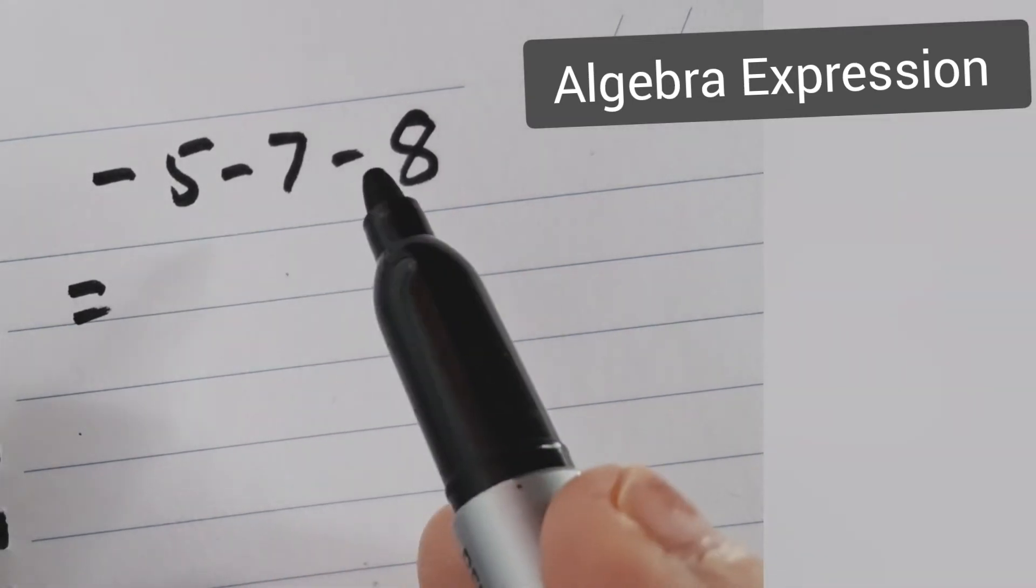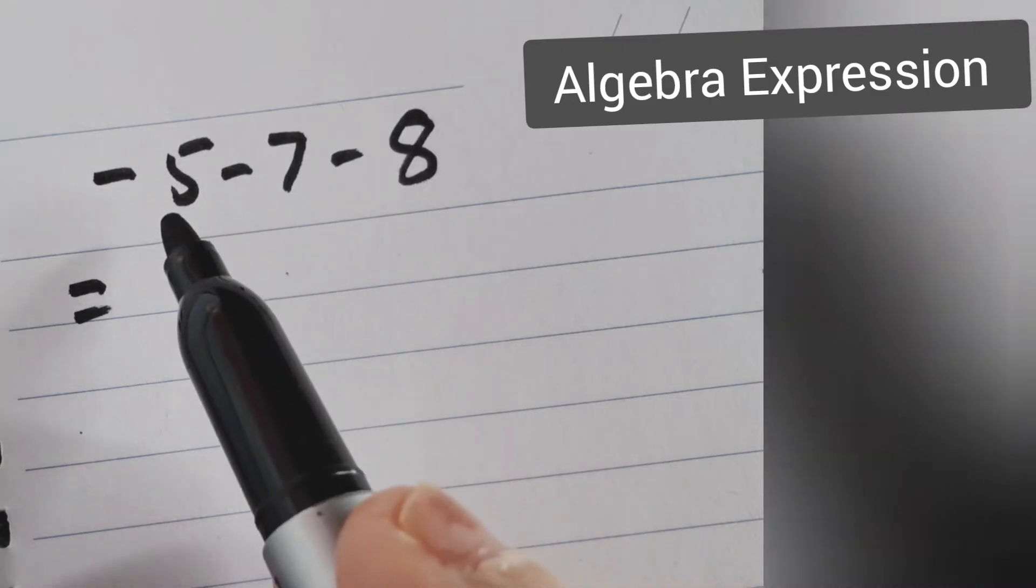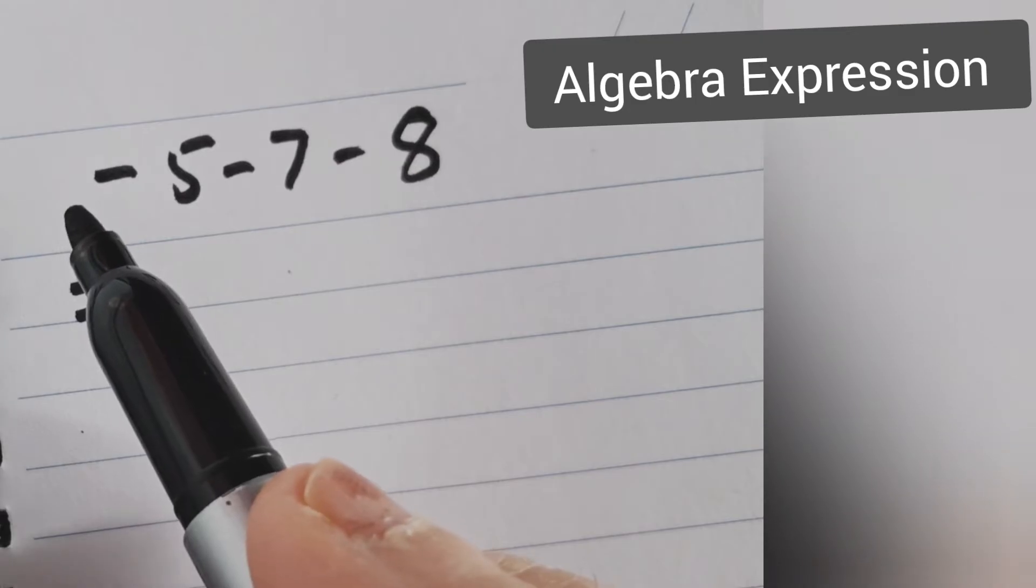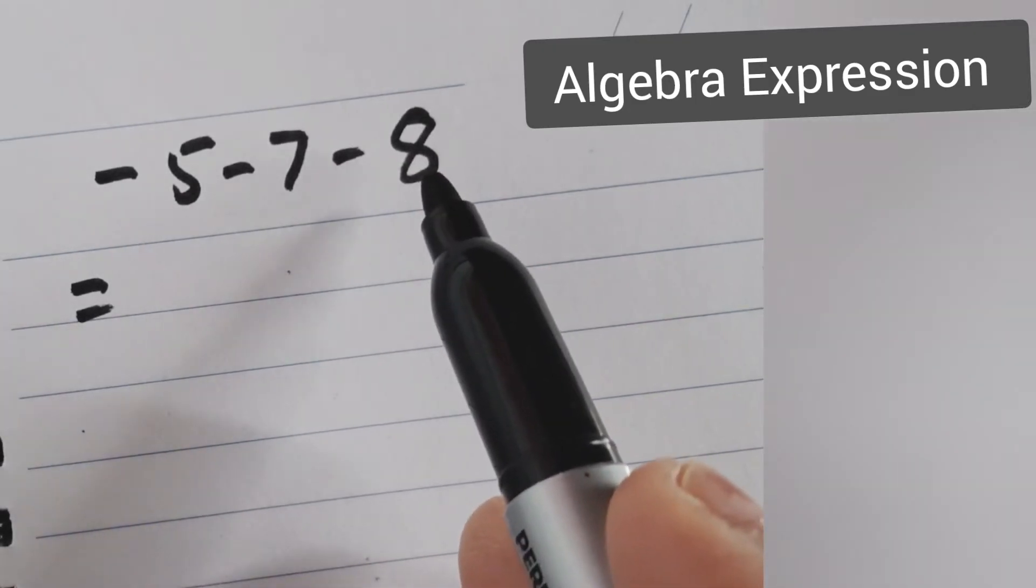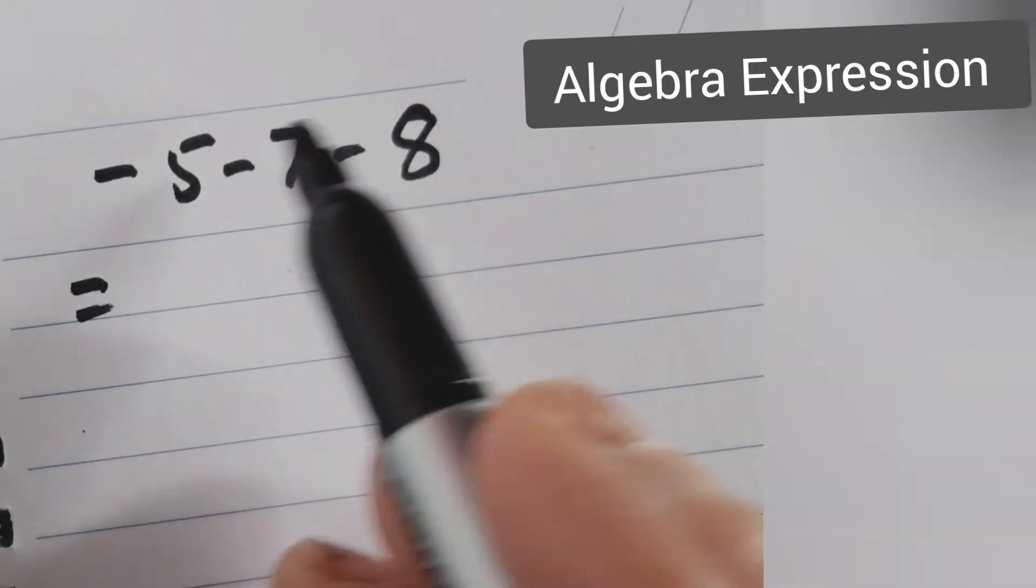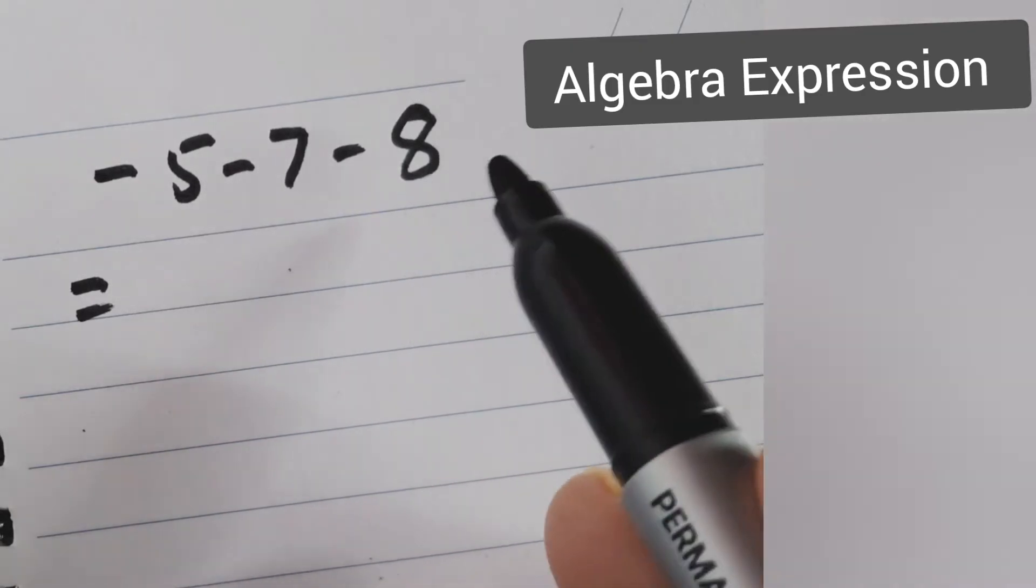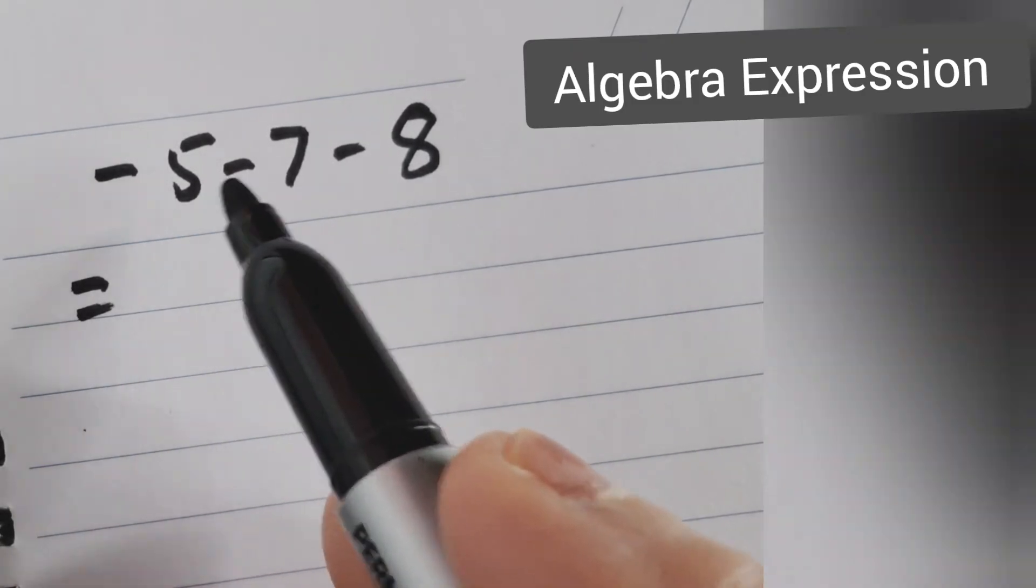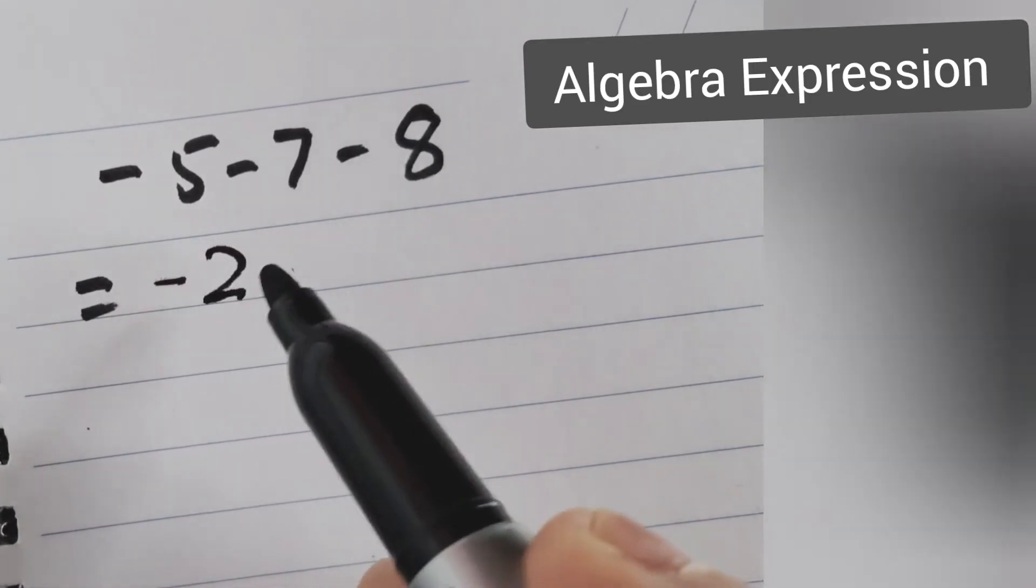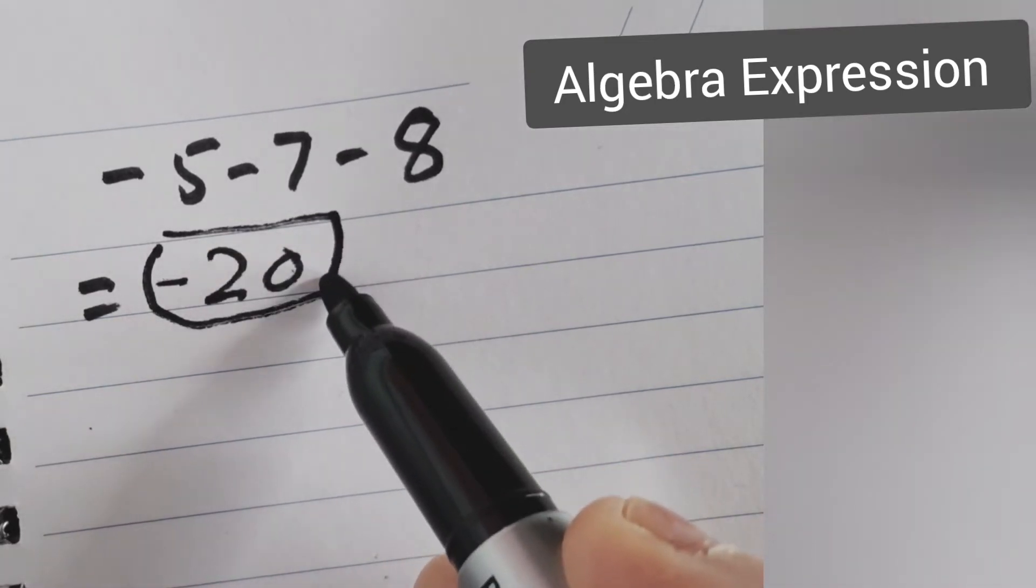In this algebra expression, we have three numbers - constants - and they are all negative. So how do we do this? We will add them together: 5, 7, 12 minus 8, 20. The three signs are negative, so we have -20. In algebra, we simplify like that.